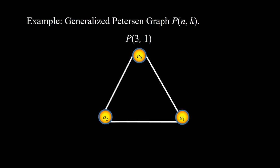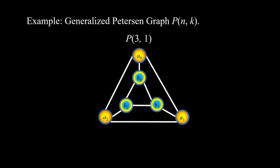Now we're going to look at the generalized Petersen graph P(3,1). This is the cycle C3, and here are the B vertices: B0, B1, and B2. These are the AB edges, and these are the BB edges.